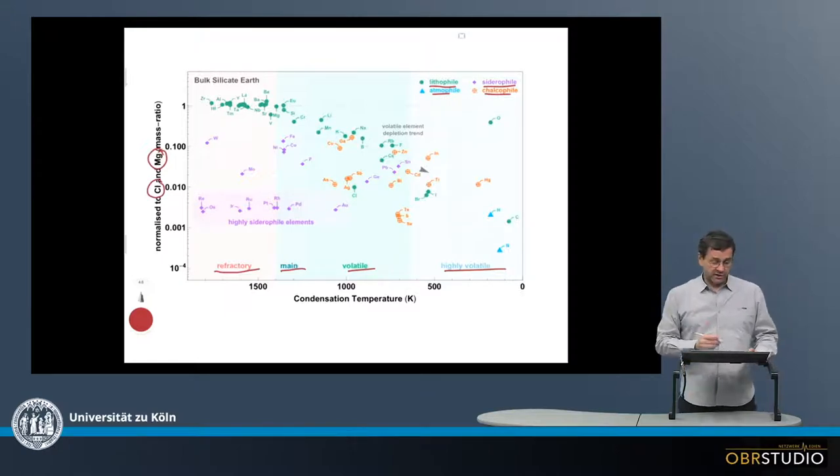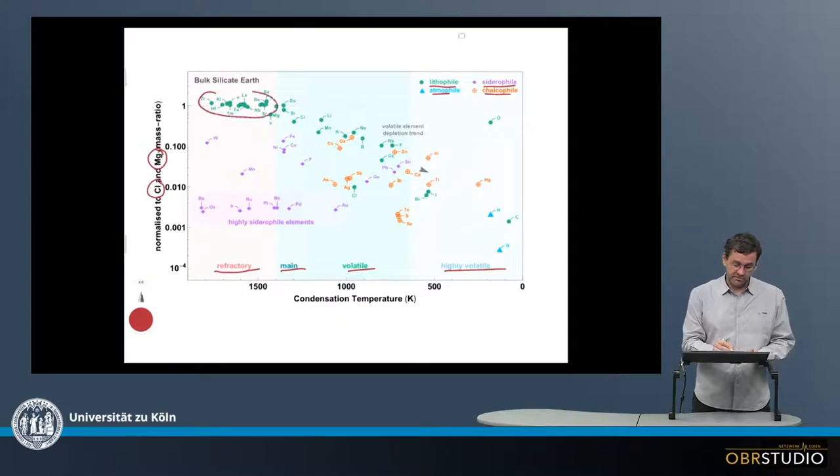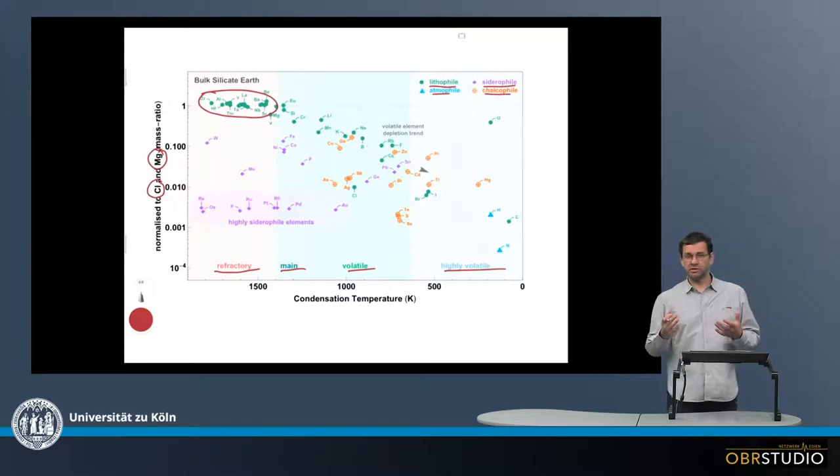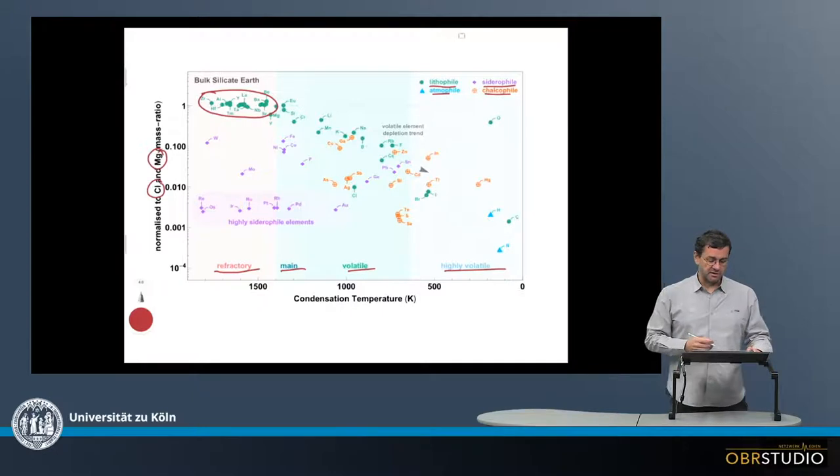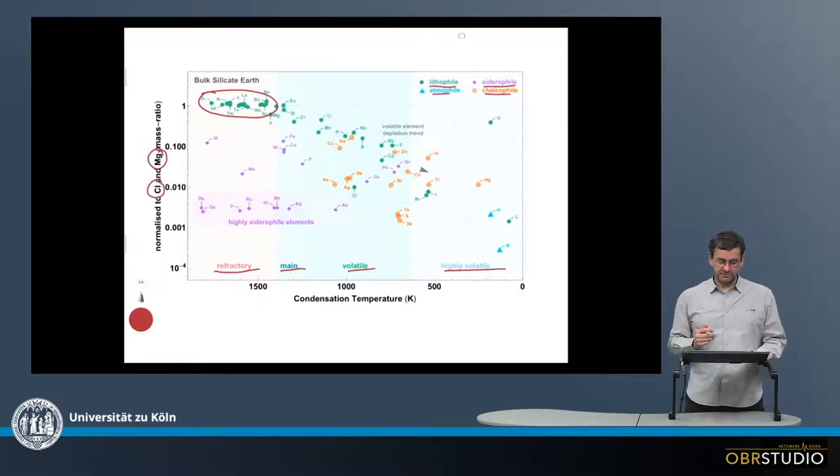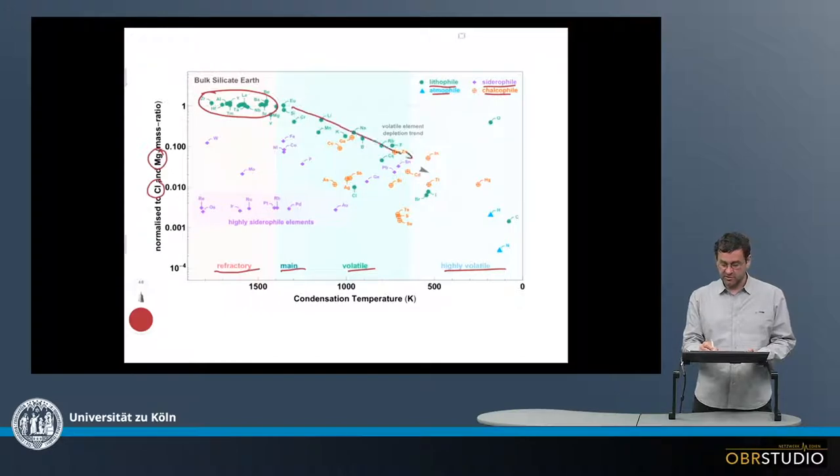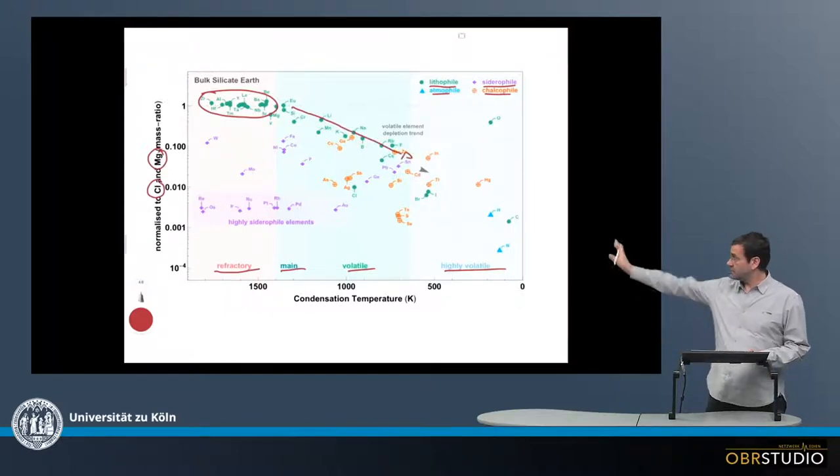Now let me first look at the refractory lithophile elements. These have more or less identical abundances as in the CI chondrites. Then starting with the main elements, the lithophile elements are about monotonically depleted in the Earth. There is a certain trend downwards here, as we can see.